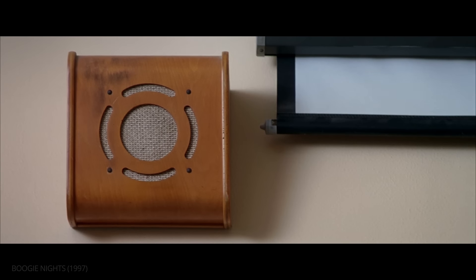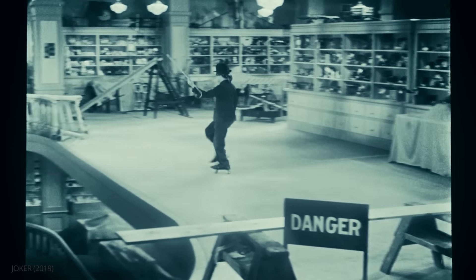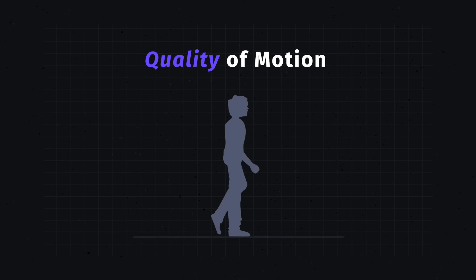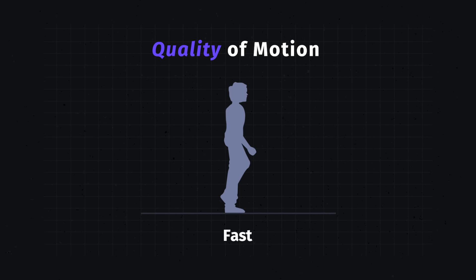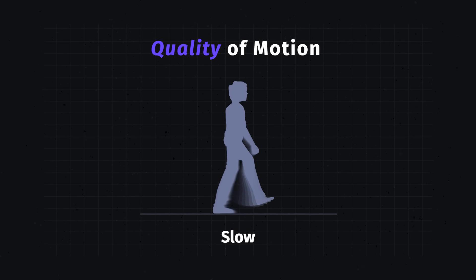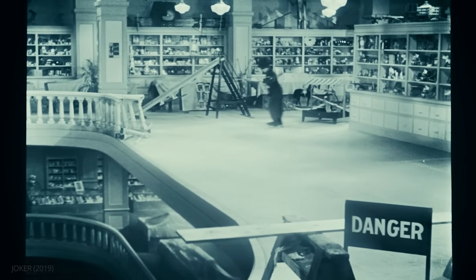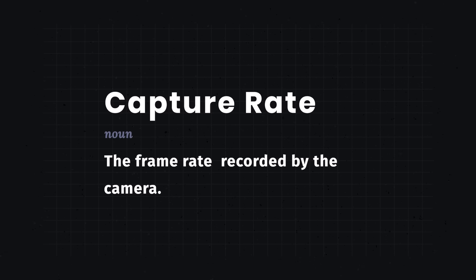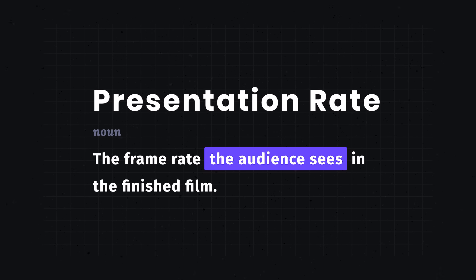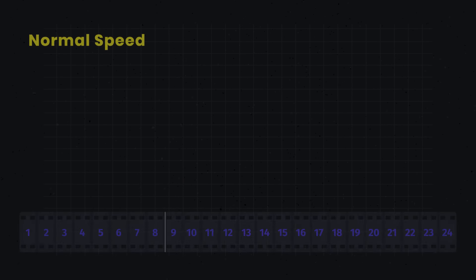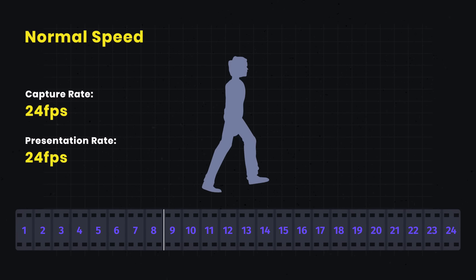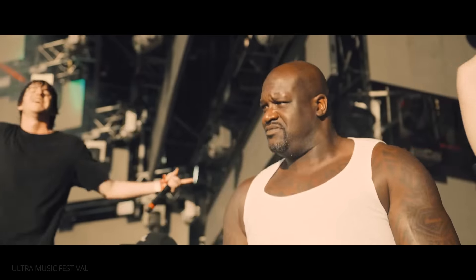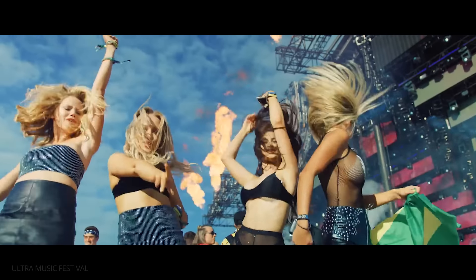Deciding which frame rate to shoot at depends on what you want the final product to look like — what we'll call the quality of motion: normal motion, fast motion, or slow motion. The final frame rate we see on screen is actually the relationship of two different speeds: the capture rate and the presentation rate. Capture rate is how many frames per second were recorded by the camera, while presentation rate is how many frames per second the audience sees in the finished film. For normal speed motion, the presentation rate must equal the capture rate. If you're shooting something with a lot of motion, like sports or concerts, you might want to shoot and present at higher frame rates, as the additional frames will make motion appear smoother.